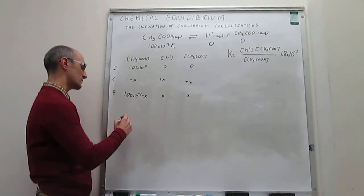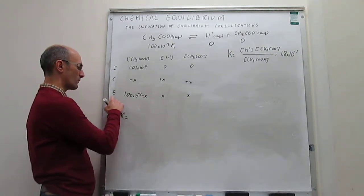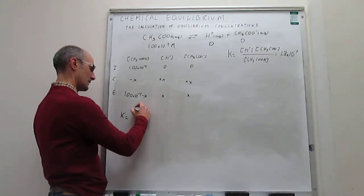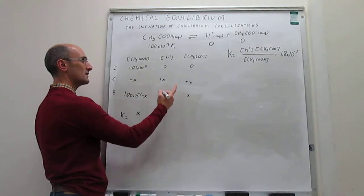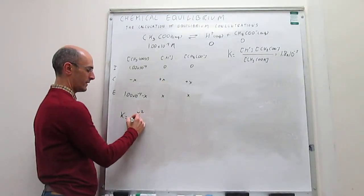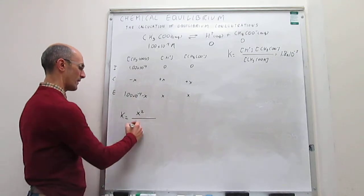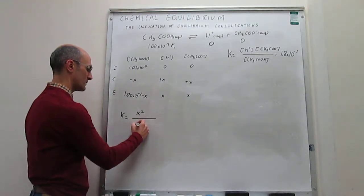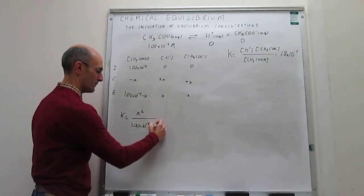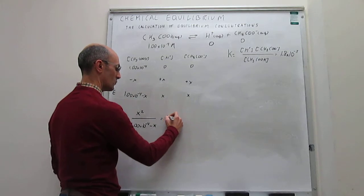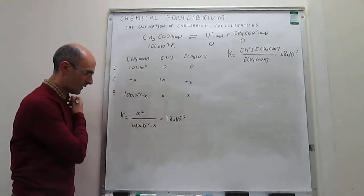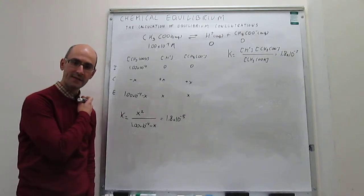We are now ready to plug the equilibrium values into the equilibrium constant expression. The concentration of protons is x and the concentration of acetate is x, giving x² in the numerator. In the denominator we have the concentration of acetic acid, which is 1.00×10⁻⁴ minus x. This entire expression must equal 1.8×10⁻⁵, and we need to solve for x.